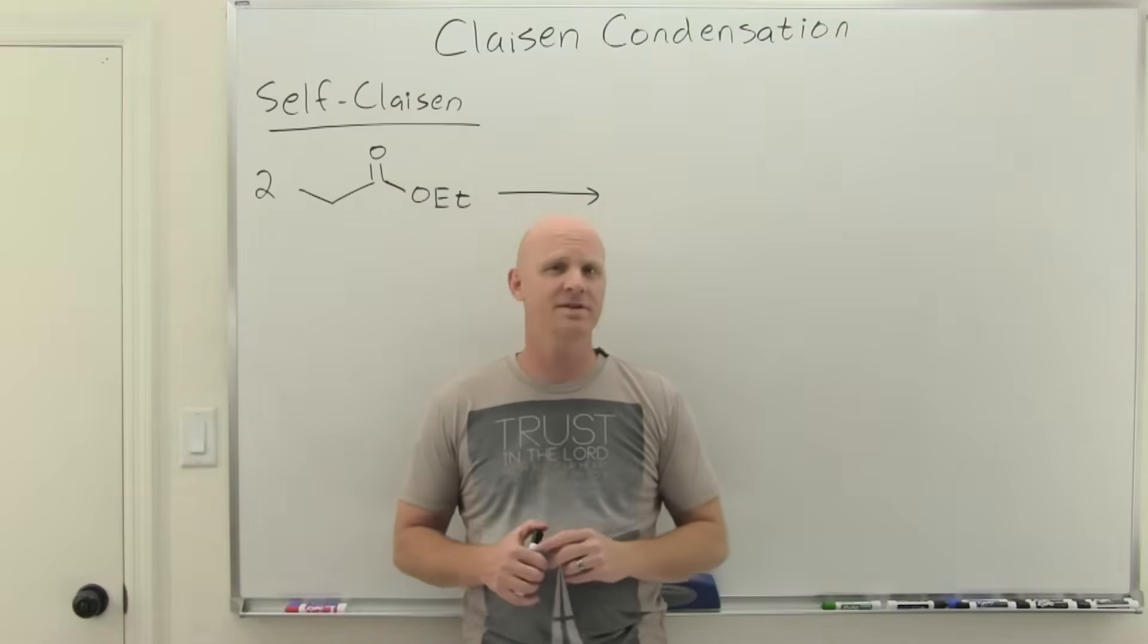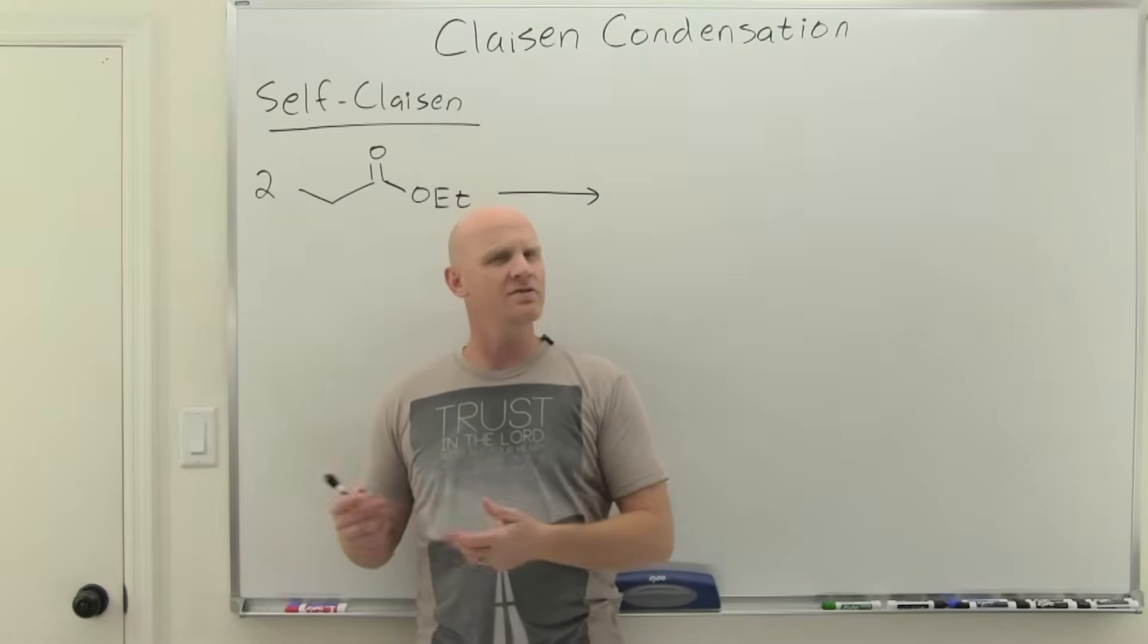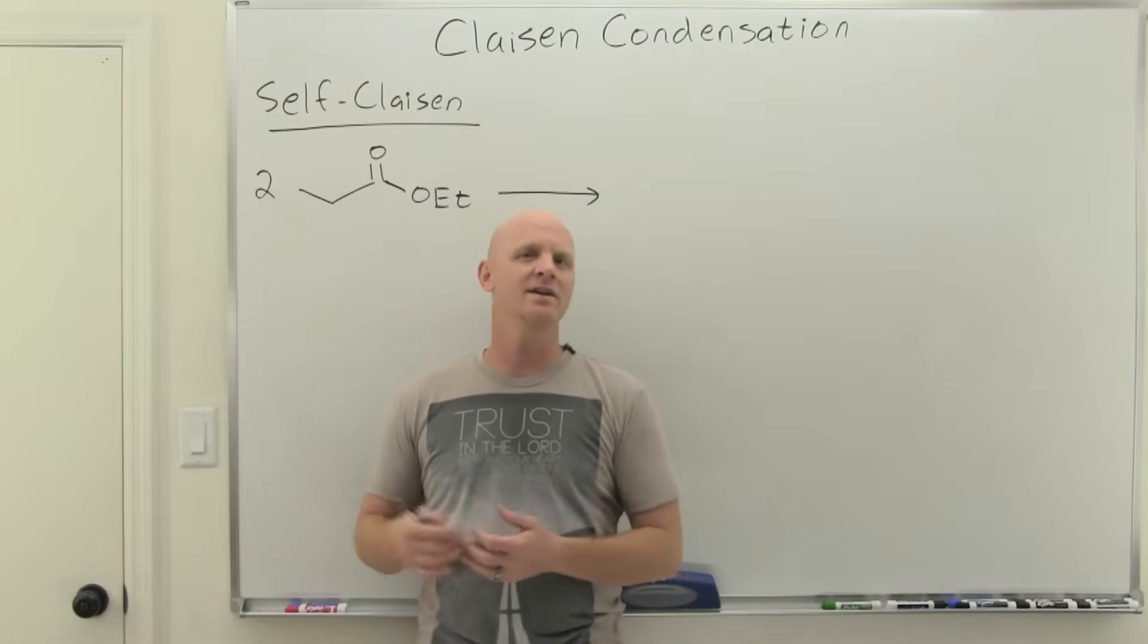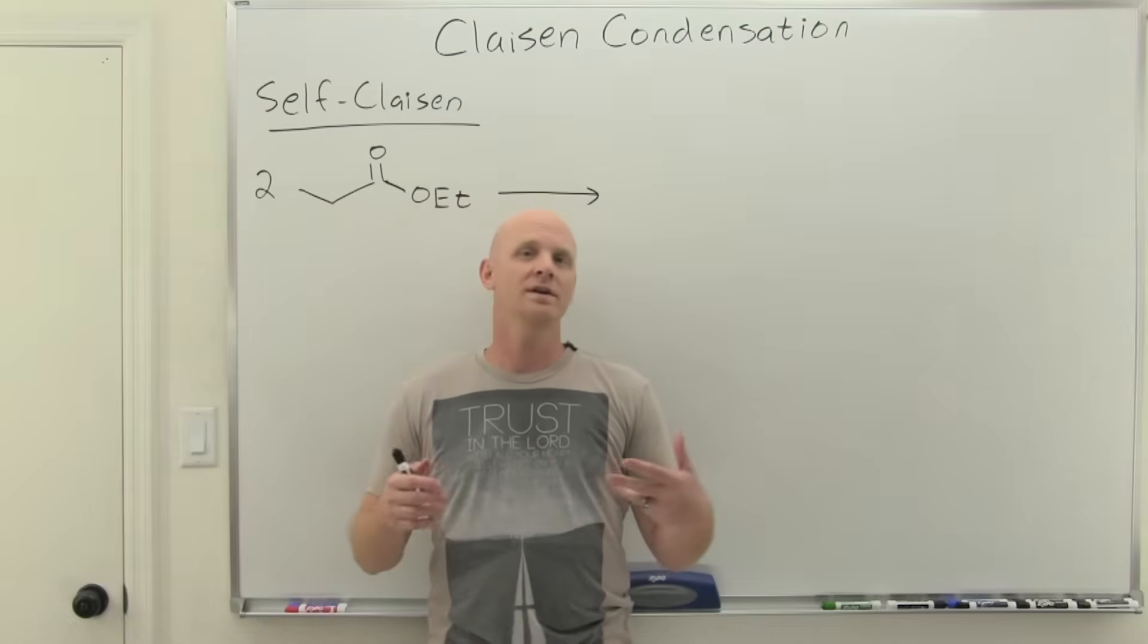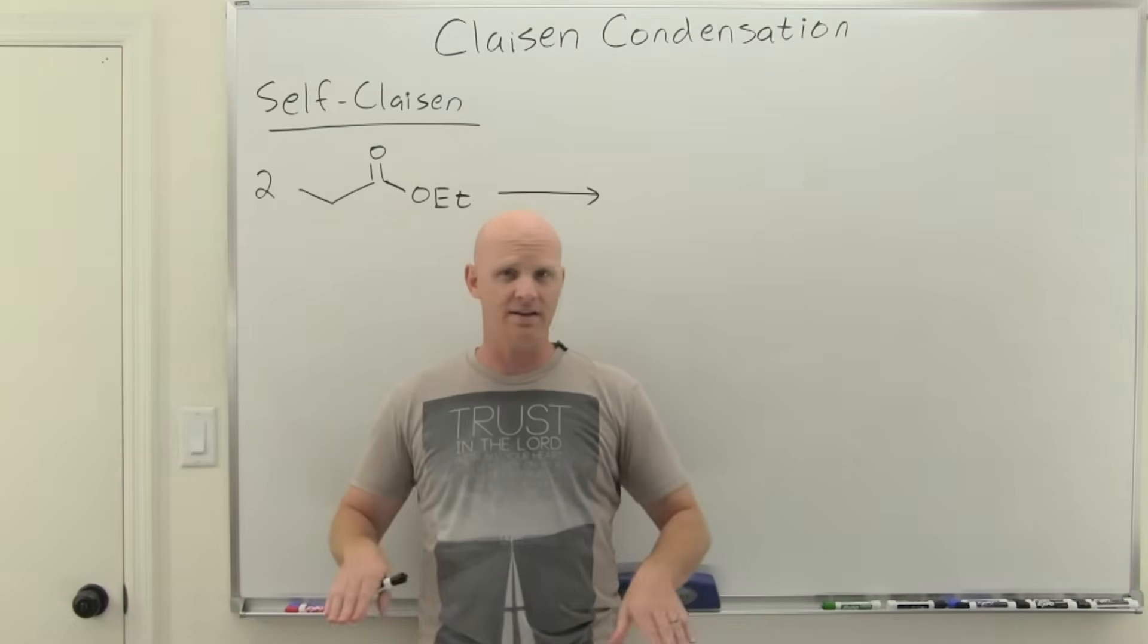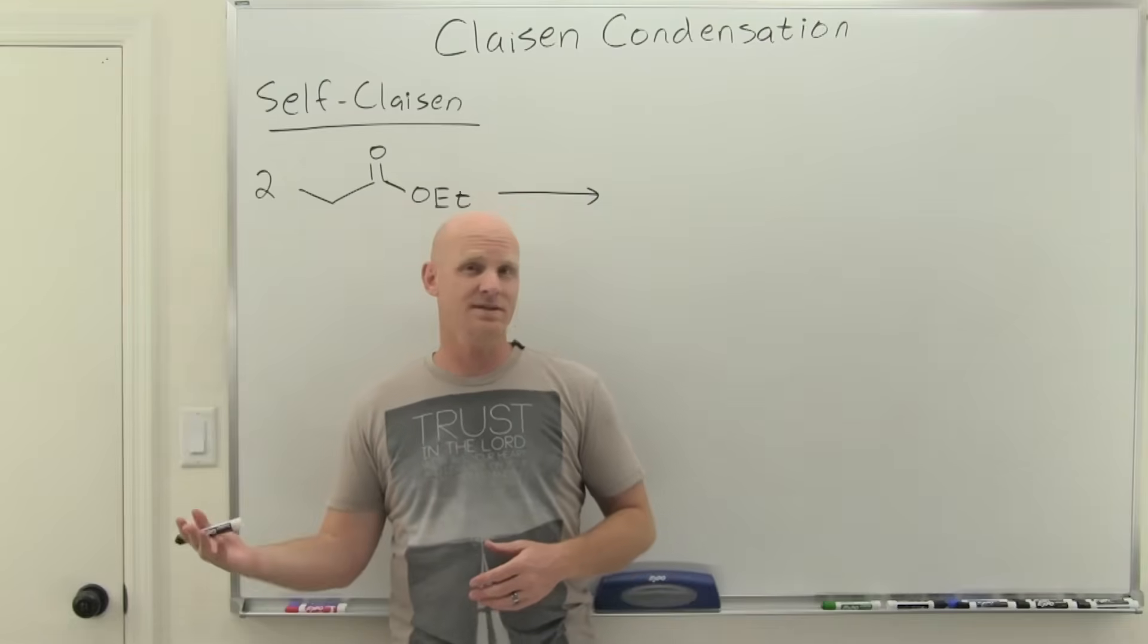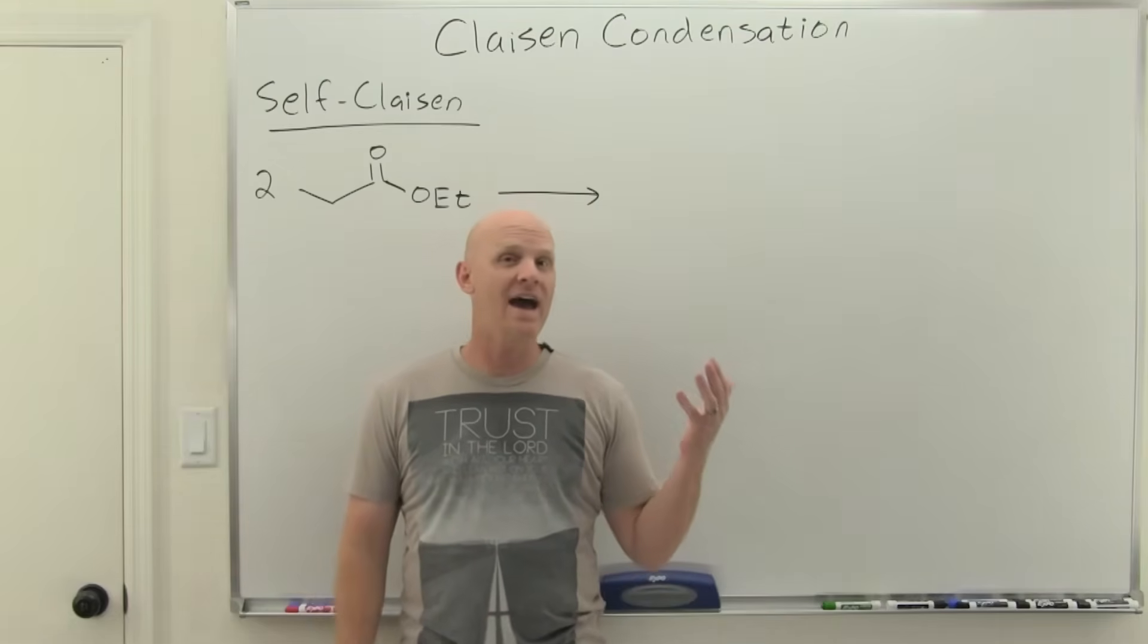Claisen condensation reaction is the topic in this lesson and we'll see some similarities to aldol reactions. In the aldol we had an enolate or enol attacking a ketone or aldehyde. In the Claisen reaction they're only base catalyzed, so you're only dealing with an enolate as the nucleophile and they'll be attacking an ester.